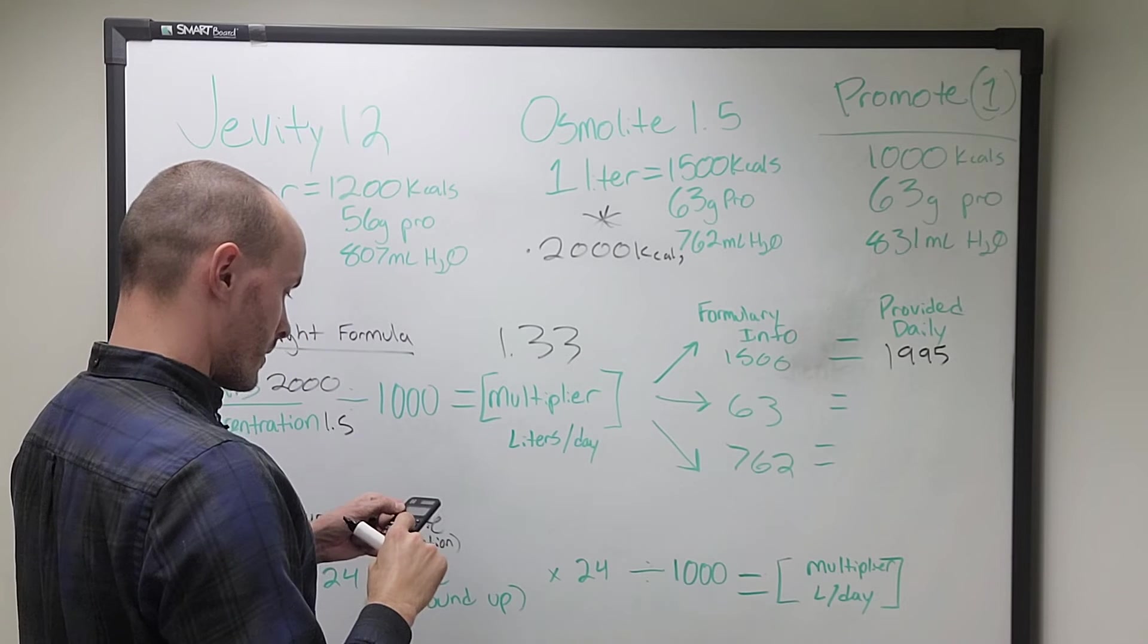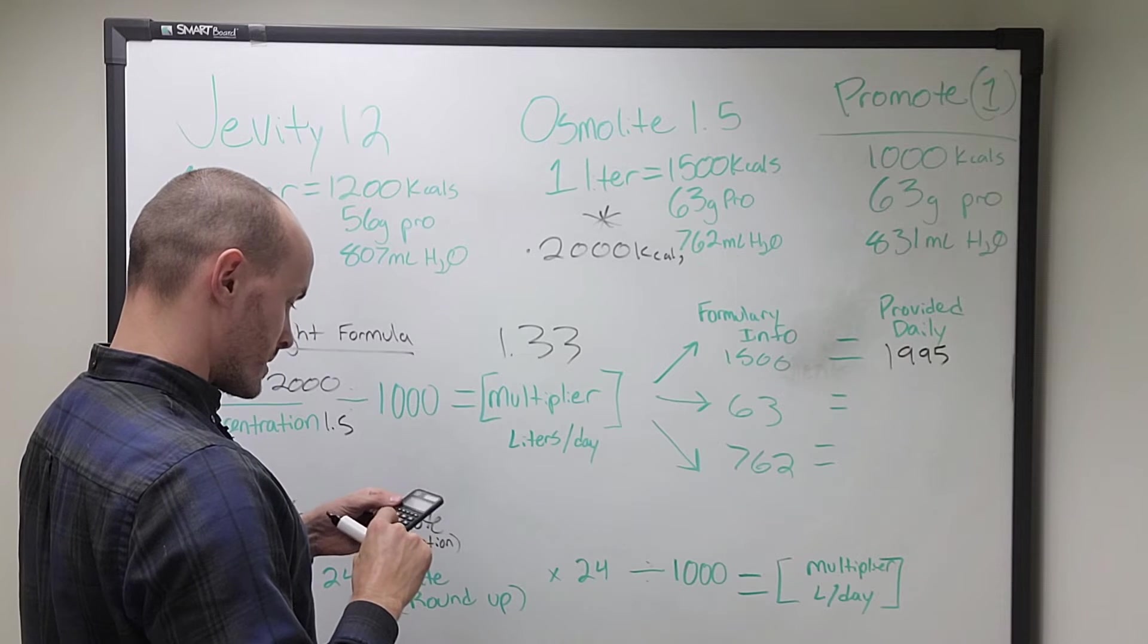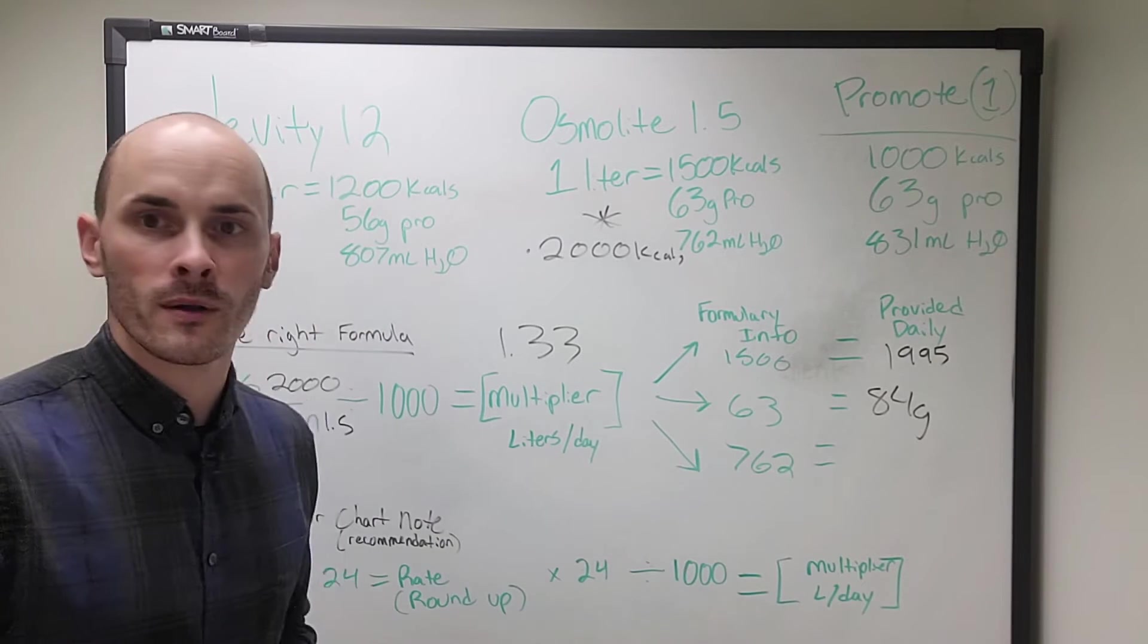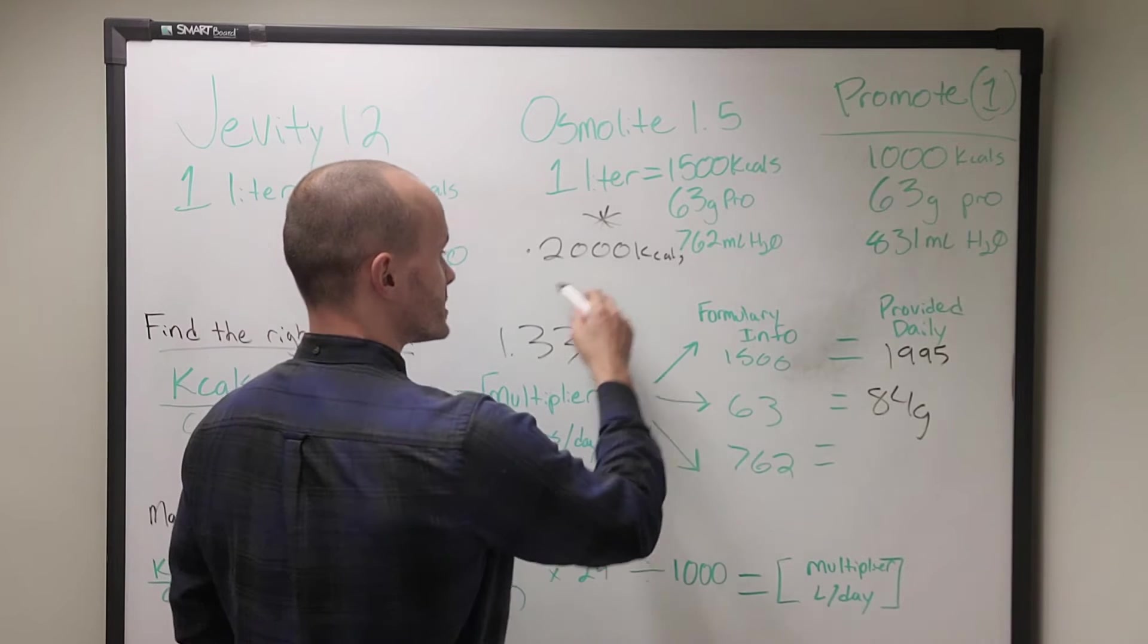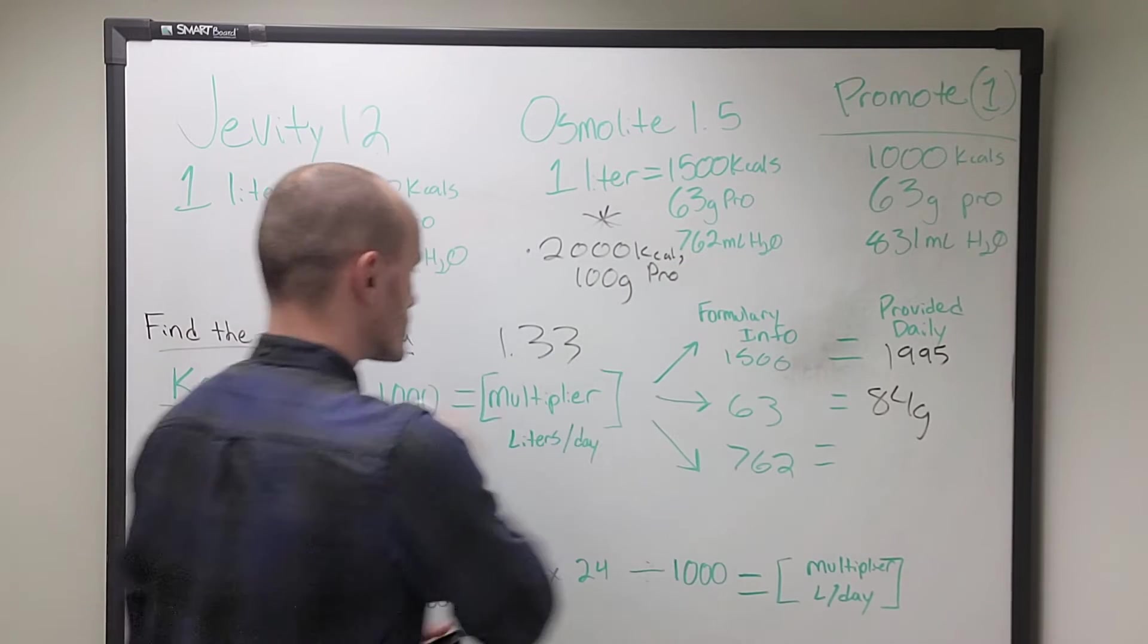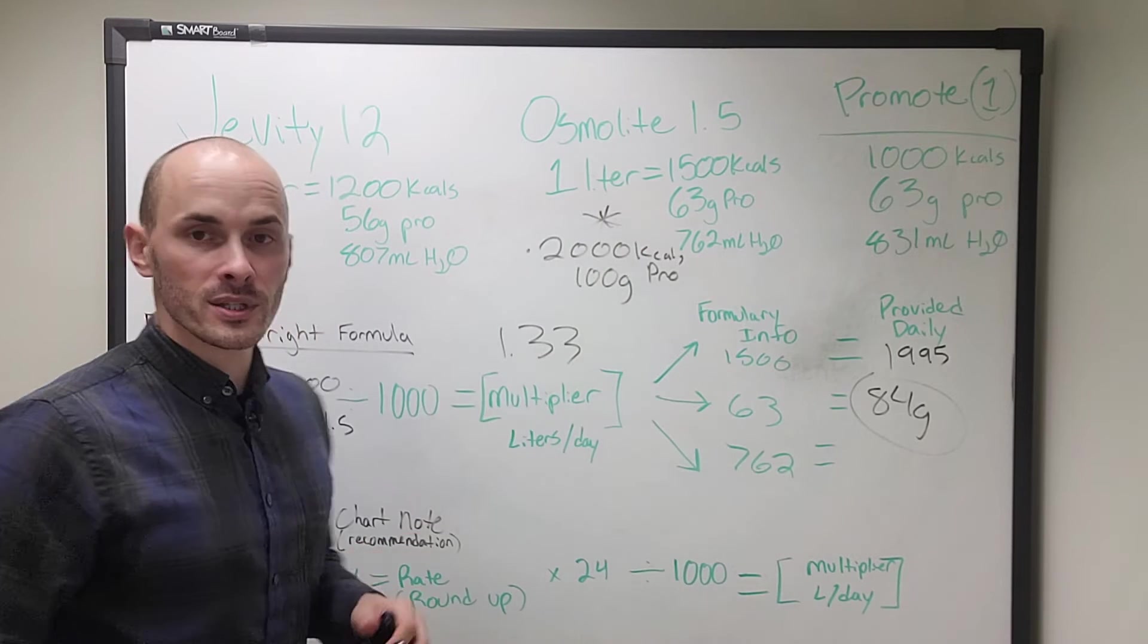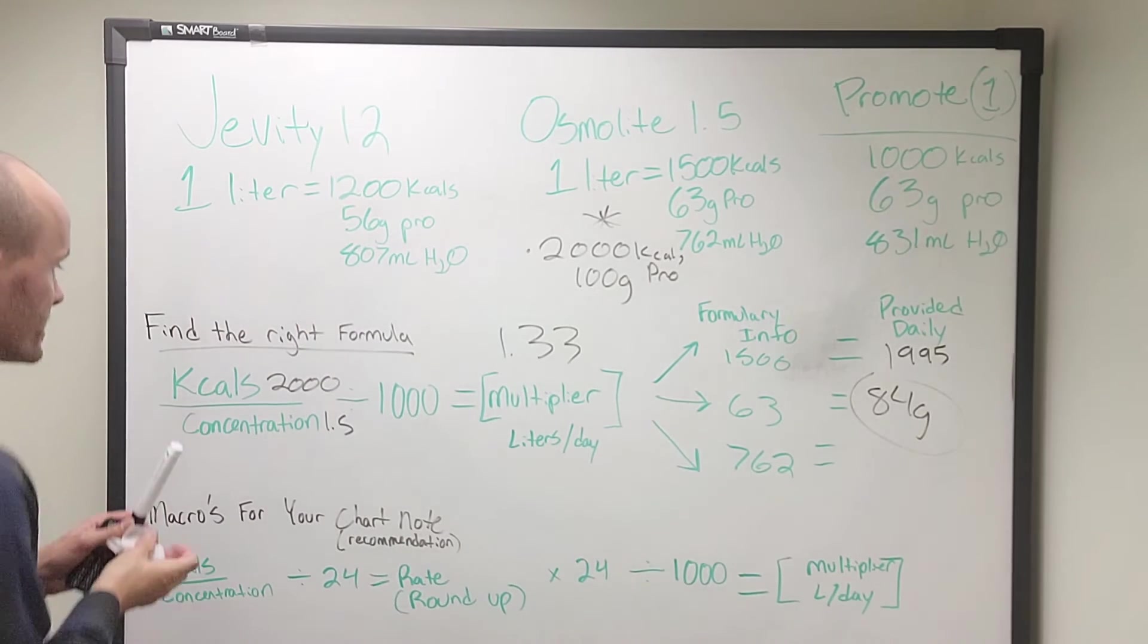Then we can use that multiplier and multiply it by the protein. 1.33 times 63, 84. Now we can skip the water part for now. That's not really that important. The reason that you're going to want to know this equation to find the right formula is because let's say our patient here needs 100 grams of protein. So by running this number, what we see is that you won't get enough protein by meeting their calorie needs. So this formula here isn't going to work for our hypothetical patient.